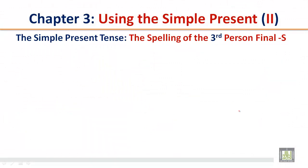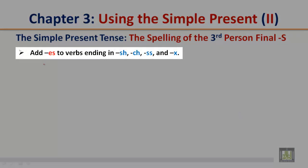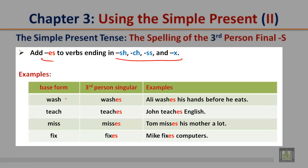The spelling of the third person final S: add ES to verbs ending in SH, CH, SS, and X. 'Wash' becomes 'washes' — Oli washes his hands before he eats. 'Teach' becomes 'teaches' — John teaches English. 'Miss' becomes 'misses' — Tom misses his mother a lot. 'Fix' becomes 'fixes' — Mike fixes his computer.